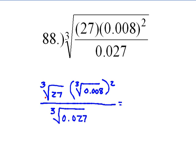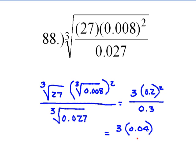The third root of 27 is 3. And the third root of 0.008 is 0.2. And we have to remember to square that. And the third root of 0.027 is 0.3. So let's finish up the problem. 3 times 0.04 divided by 0.3 should give us 0.4.